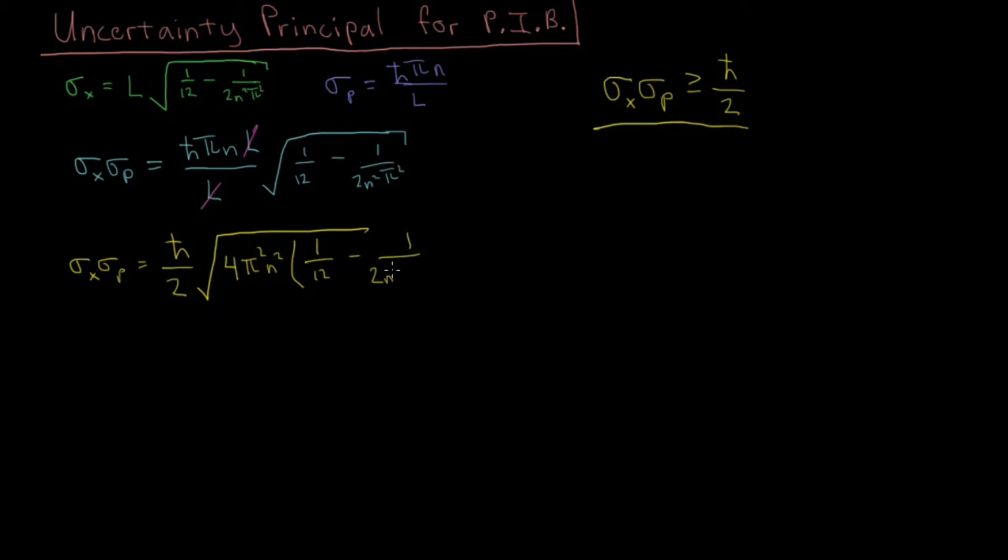And then the rest of that stays the same. So next we're going to distribute between these two terms and see what those two terms then become. So we have sigma x sigma p equals ℏ/2 square root of, on the top we have π²n²/4 divided by 12, that gives us a 3 on the denominator. And then we have 4π²n² over 2n²π², so that cancels out to give us a 2.